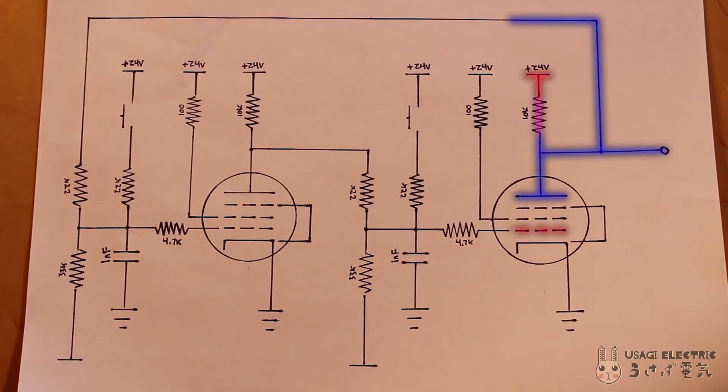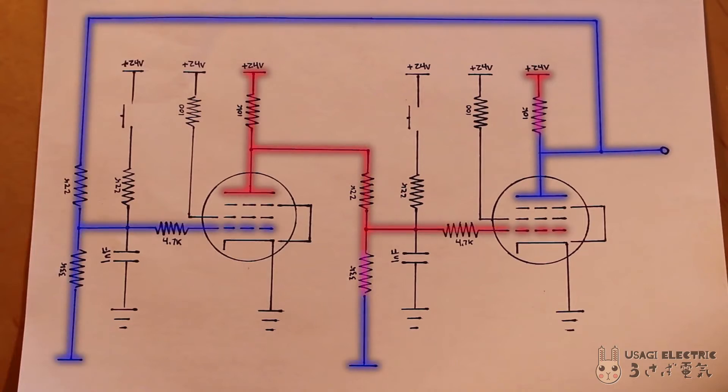When storing a 0, the output of one tube is low. This output is fed into the opposing tube as an input, which pulls the grid low and brings the output high. That high output is fed back into the original tube, keeping its grid high and output low.